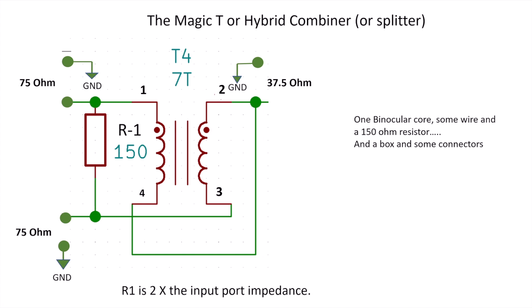The magic T is another name for a hybrid combiner or splitter. These devices can be used in either function. Here's the schematic of the device. They're really quite simple - basically one binocular core, some wire, one resistor, and perhaps a box and some connectors. Combiners like this are used in a lot of circuits. Most phased combiner boards will use them. They're also used in splitters.